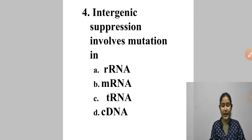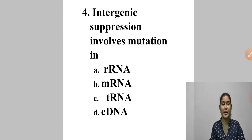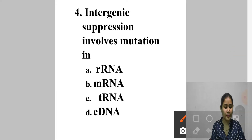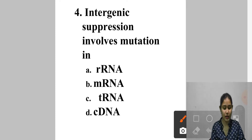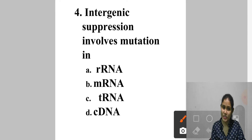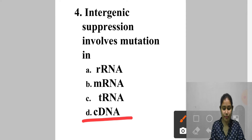Question 4: Intergenic suppression involves mutation in — A. rRNA, B. mRNA, C. tRNA, D. cRNA. Intergenic mutation is a mutation that alters the anticodon in a tRNA so that it is complementary toward a termination codon, thus suppressing the termination of the amino acid chain. Answer is option C — tRNA.